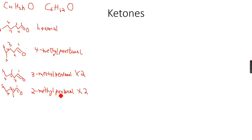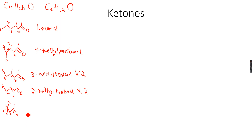We are done with the five carbon main chain, so now let's move to the four carbon main chain. I can have two methyl groups here. You can see one, two, three, four — in any case there are four carbon atoms in the main chain, and there are two methyl groups attached to the third carbon atom.